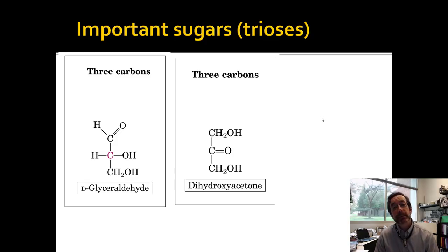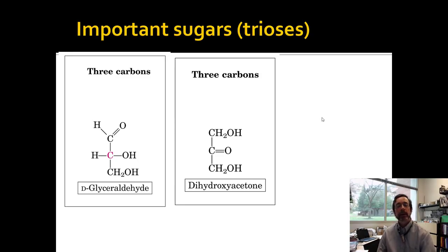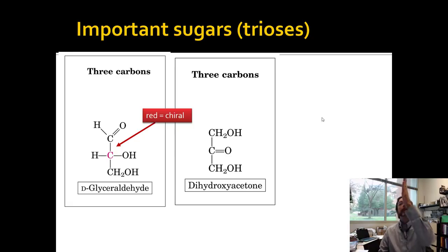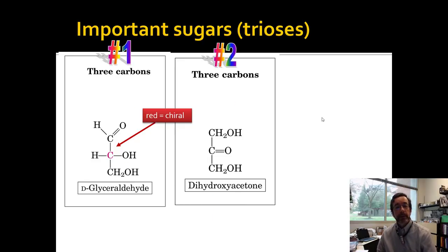Now I want to tell you which sugars to memorize. You need to memorize two trioses: glyceraldehyde and dihydroxyacetone. These are drawn according to Fischer projections, so the red carbons are going to be chiral — left and right mean coming towards you; up and down mean going away from you. You have a triose that's an aldose and a triose that is a ketose.